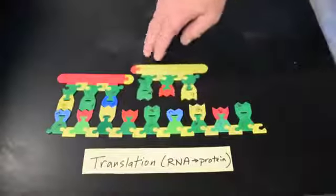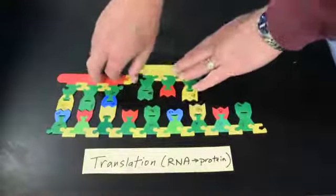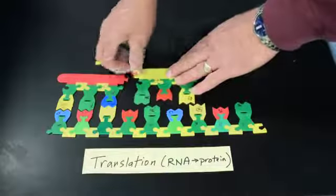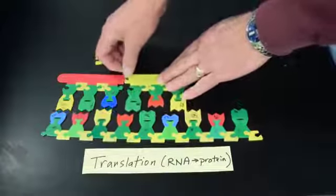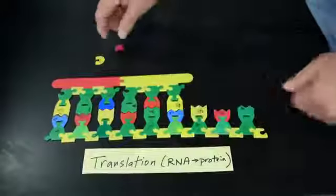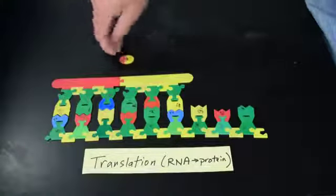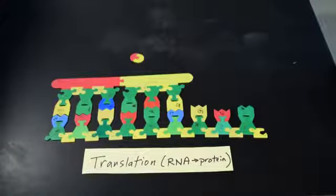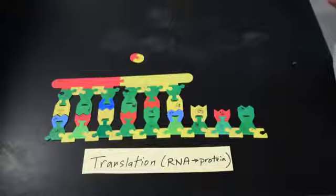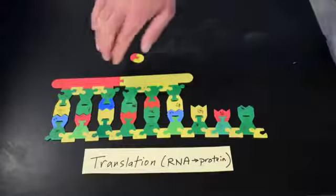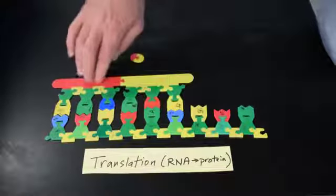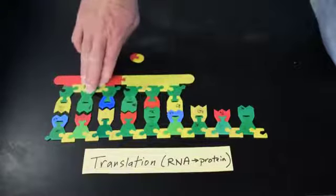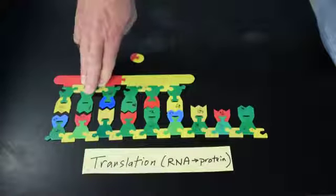Now when the second one comes in, a bond between the first amino acid and the second amino acid will form. The H and the OH at the ends of the amino acid will form water. That's dehydration synthesis that you perhaps remember from earlier in the semester. And then when this bond forms, the bond holding the tRNA to the first amino acid will break.